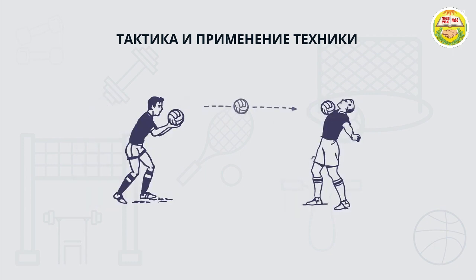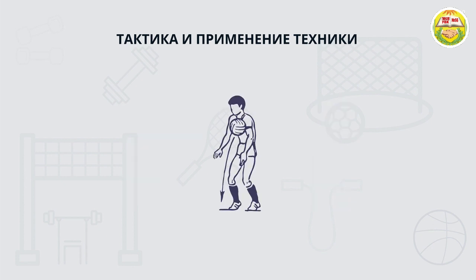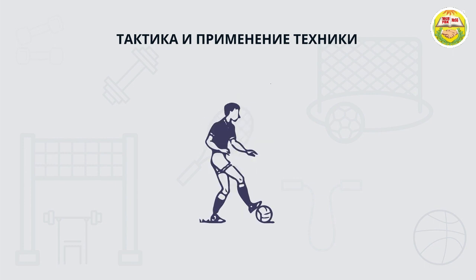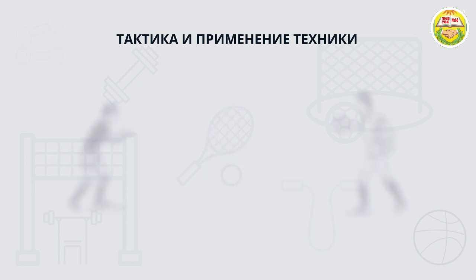Следующая ситуация практикуется в защите. Мяч набрасывается с расстояния 7-10 метров, траектория любая. Игрок гасит инерцию мяча, а потом переводит влево или вправо, овладевая мячом и начинает вести его. Таким образом, мяч готов к передаче и защищен.